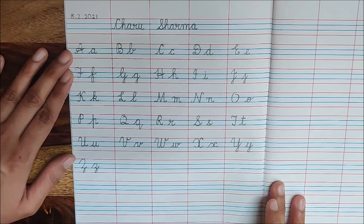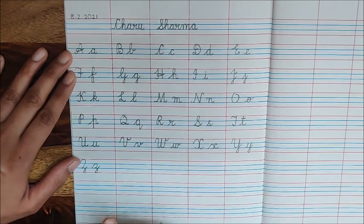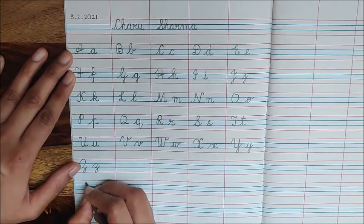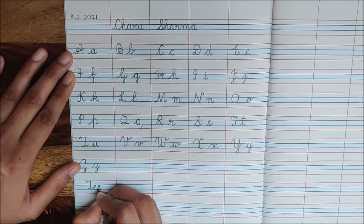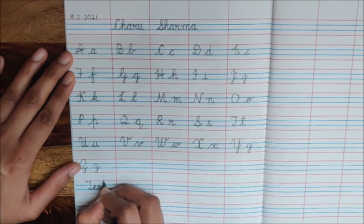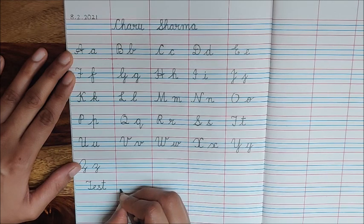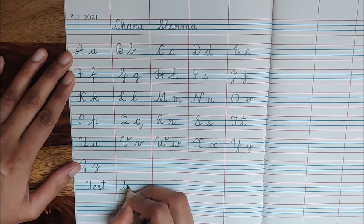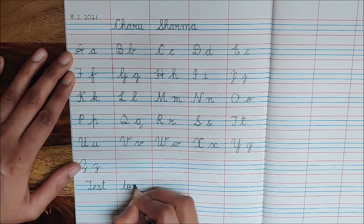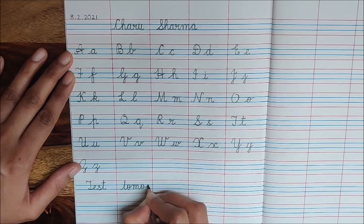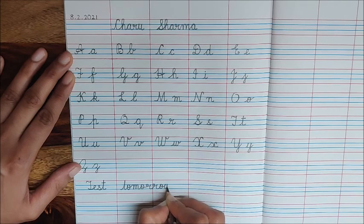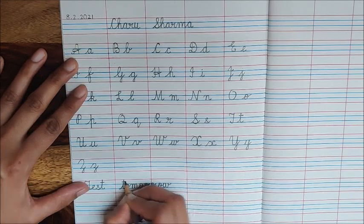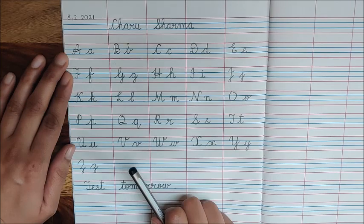Children, you have to practice writing A to Z for test tomorrow. So write down here. T. E. S. T. Test. Tomorrow. It's a big word but very simple to write. T. O. M. O. R. R. O. W. Tomorrow. Full stop. So children, practice writing A to Z for test tomorrow and also the formation of all the letters should be correct.